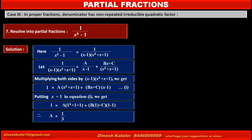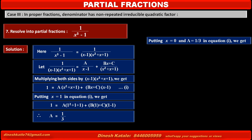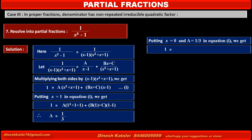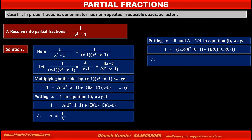It is easy to find the value of C by making the term of B equal to 0. Putting x equal to 0 and A equal to 1 upon 3 in equation 1, we get 1 equals (1 upon 3)(0 squared plus 0 plus 1) plus (B times 0 plus C)(0 minus 1). Solving the above step, we get C equal to minus 2 upon 3.